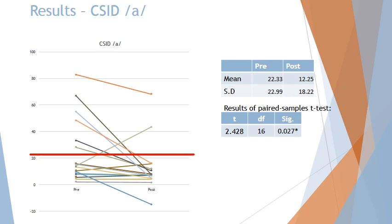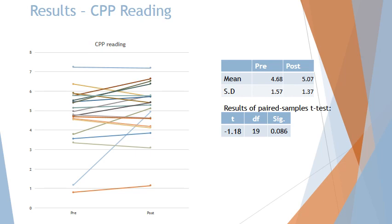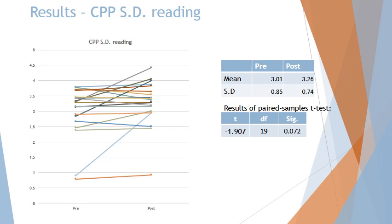The CSID also improved — the mean CSID pre-treatment was 23, post-treatment was 12. We managed to get all but two patients within the normative range so they're not regarded as dysphonic, and this was also statistically significant. As for passage reading, the CPP improved in terms of mean scores, but this did not reach statistical significance. The CPP-SD likewise improved from 3.01 to 3.26; however, the paired samples t-test did not show a statistically significant result.